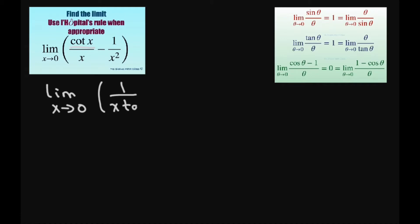So we're going to write this as the limit as x approaches zero. This will be 1 divided by x times tan of x, and then we have minus 1 divided by x squared. The next thing we're going to do is get our common denominator. If you do the least common denominator, it's just going to be x squared times tan of x.